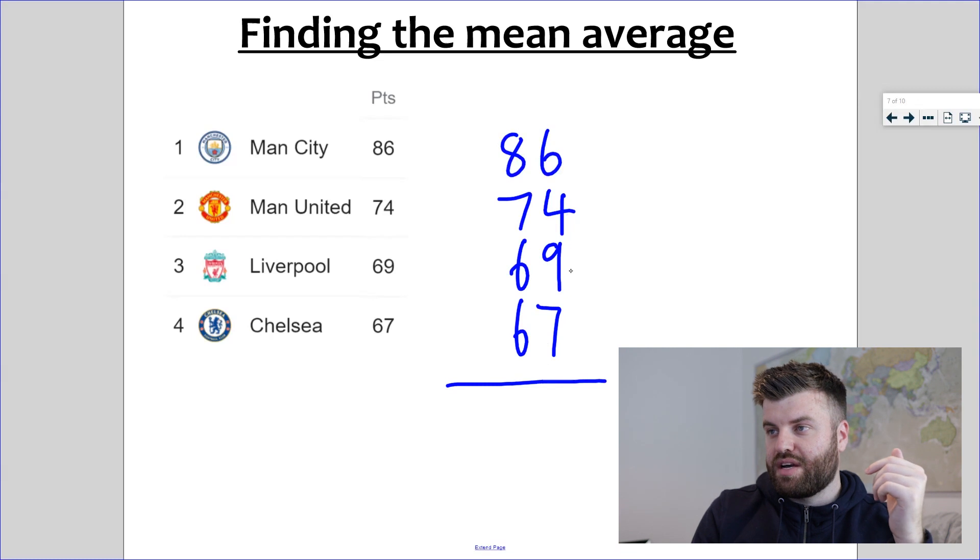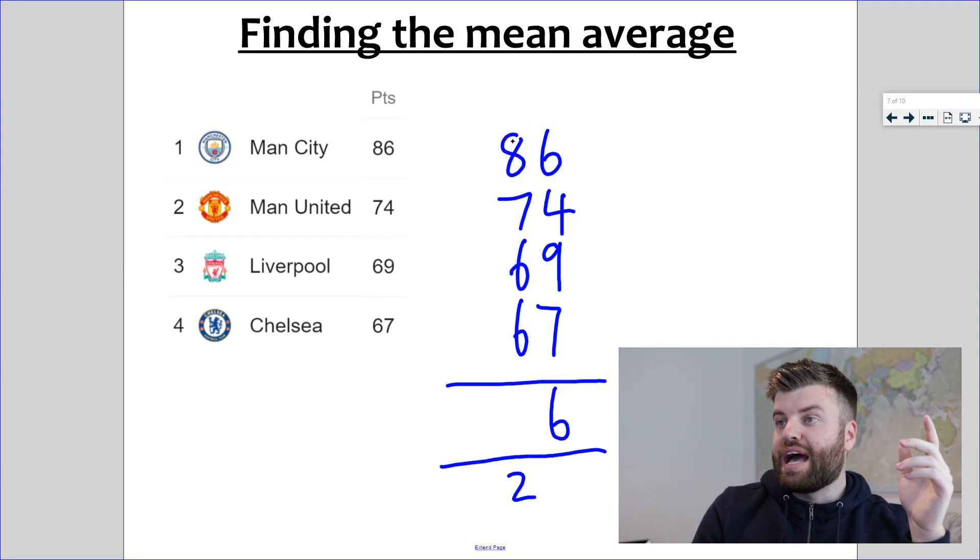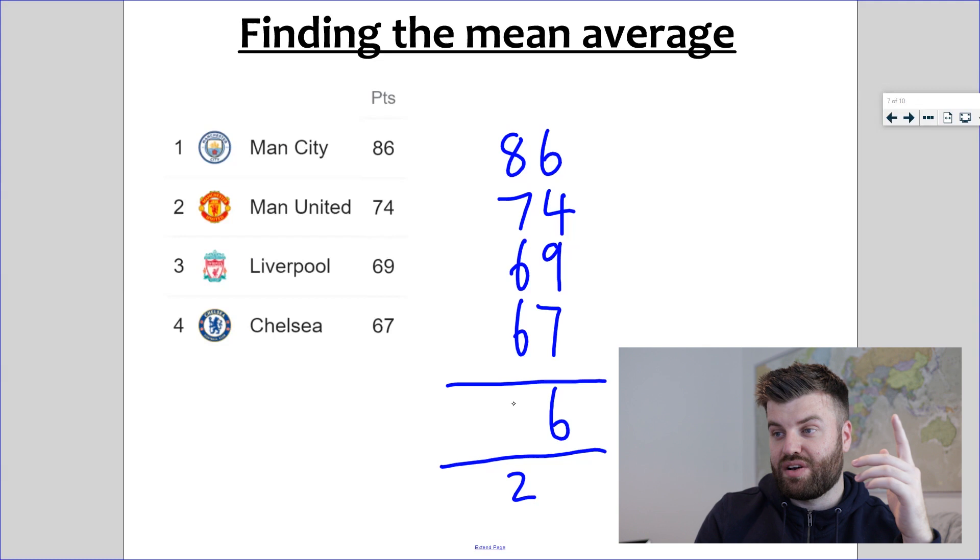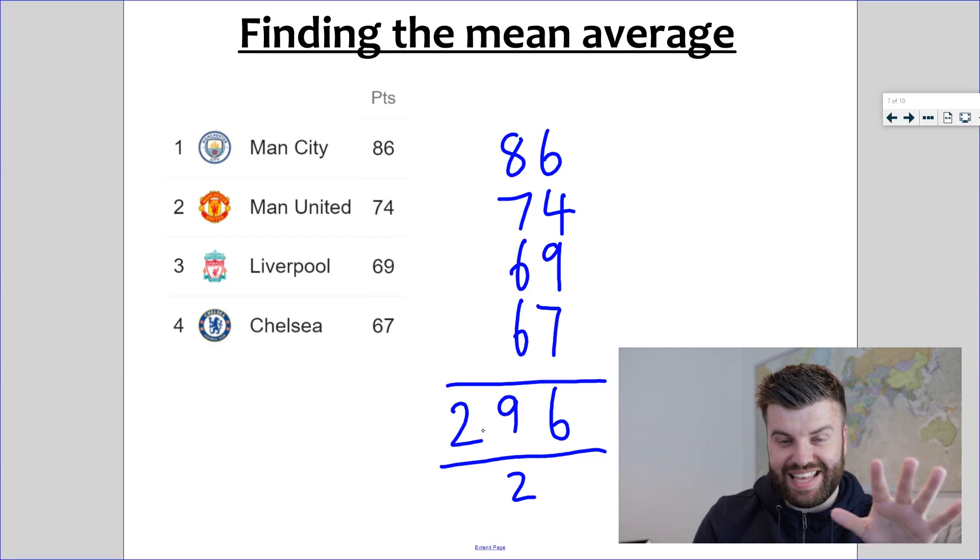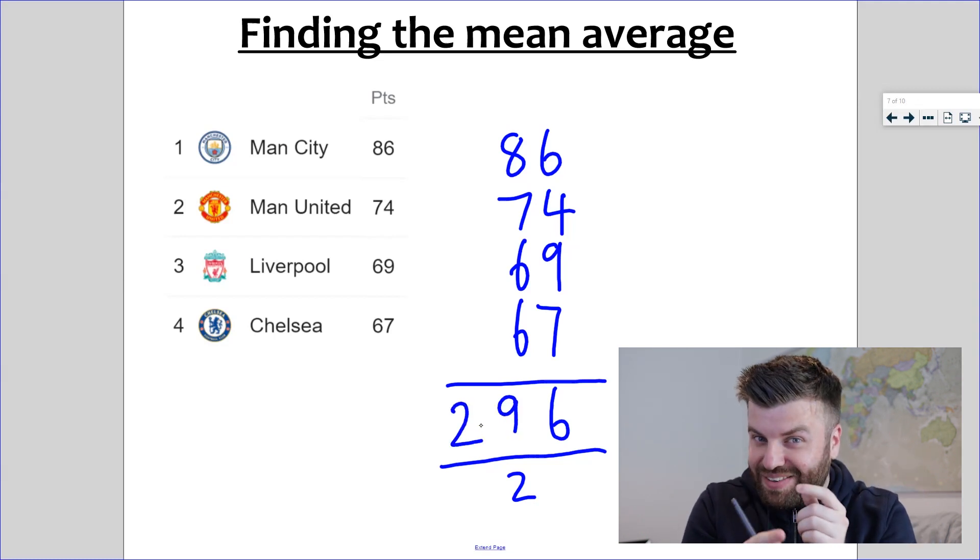Six plus four is ten, plus nine is nineteen, plus seven is twenty-six. So I put the six and I exchange over two tens. Now we're going to the tens column. I'm going to actually add them up in a different order to make it easier for myself. Eight plus two is ten, six plus six is twelve, so that's twenty-two. Add the sevens, twenty-nine. Two hundred and ninety-six.